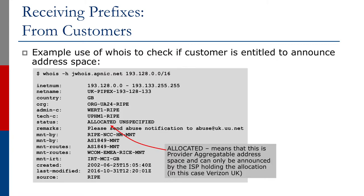If the assignment is for an ISP, as shown in this output, the status would indicate Allocated Unspecified. This means that this prefix should not be announced if it was provided to the ISP by its customer.